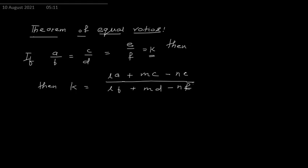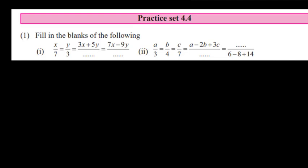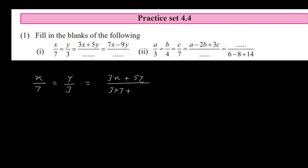Let's look at the exercise related to this — Practice Set 4.4. The first problem: x/7 = y/3. This will be equal to (3x + 5y) in the numerator. In the numerator, x is multiplied by 3, so the denominator 7 will also be multiplied by 3, giving 3×7 = 21. Plus, y is multiplied by 5, so 3 is also multiplied by 5, giving 15. So this equals (3x + 5y) / (21 + 15) = (3x + 5y) / 36.